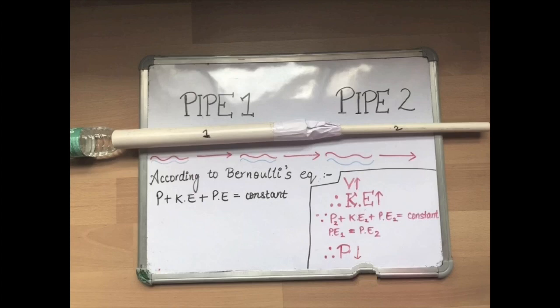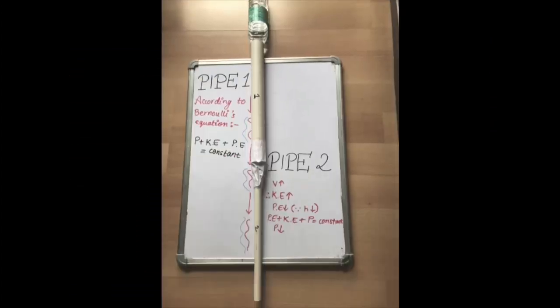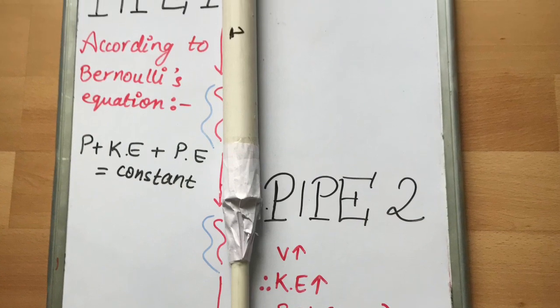Since both pipes are at the same height, the potential energy remains the same. Therefore, the pressure of the fluid is reduced when the water enters pipe 2. Now that pipes 1 and 2 are at different heights above the ground, both the pressure and potential energies will decrease as the kinetic energy of the fluid drastically increases.